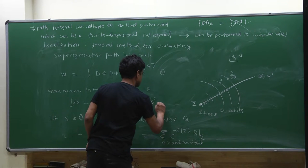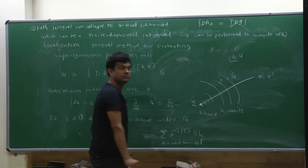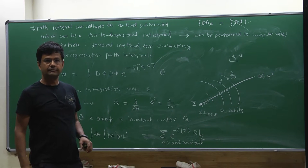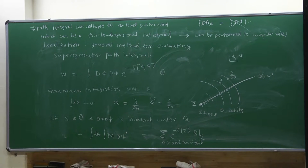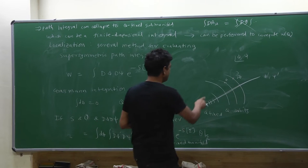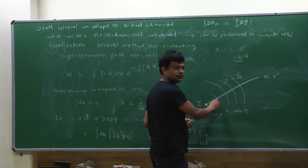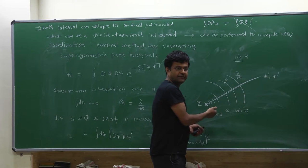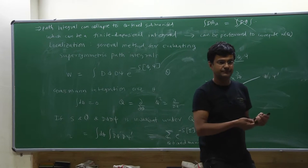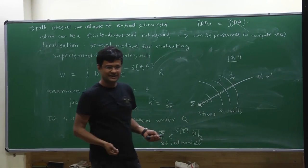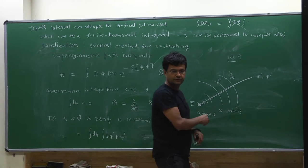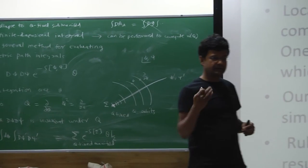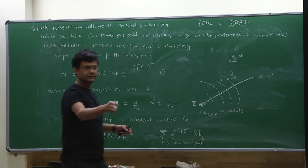Q squares to something which is a space-time translation — a compact generator. So Q² will be a translation in real space-time. Therefore, from each orbit separately, you'll get 0. The procedure can only fail when you're at a fixed point of Q — there you're not moving anywhere, there is no integration to be done. Therefore you cannot receive contributions from anywhere else. If at all, you could receive contributions from the fixed points of Q. How to implement it precisely requires a bit more machinery, which I will describe tomorrow.